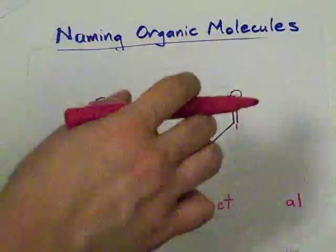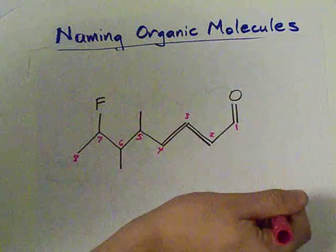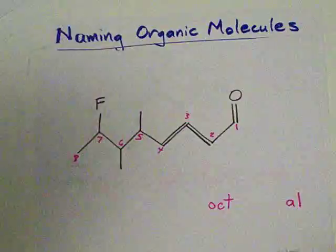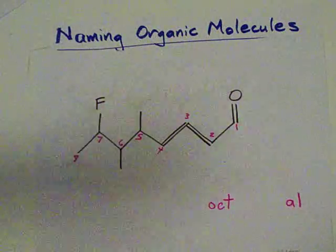Now, aldehydes have to be at the end. So you don't need a number to say where it is. Next, we need to name our side groups.